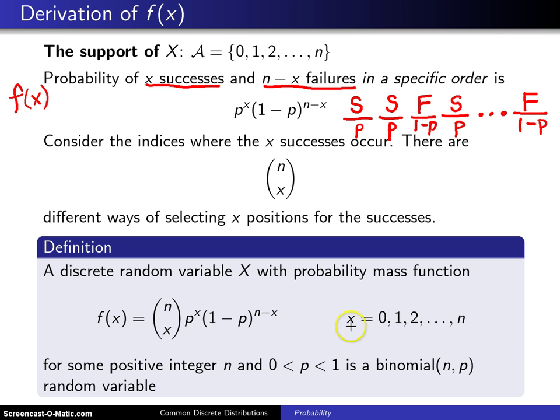For support x equals 0, 1, 2, all the way up to n, and that is your support for some positive integer n and p, the probability of success on each individual Bernoulli trial between 0 and 1, is known as a binomial random variable with parameters n and p.